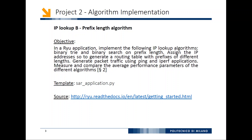Project two is similar to the first, but in this case you need to build a binary search on prefix length. Similarly, you assign IP addresses to generate a routing table with prefixes of different lengths and generate traffic with ping and iperf. The data structure is built at class definition time, at the beginning of the class. When comparing performance, the results you should obtain correspond to the expected algorithmic complexity — each algorithm has a different complexity, and the binary tree always serves as the benchmark.